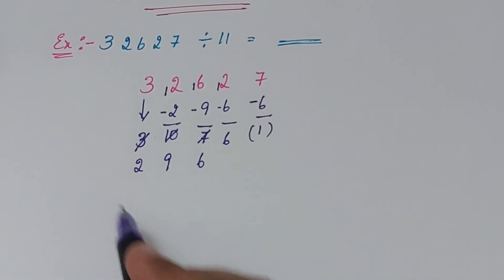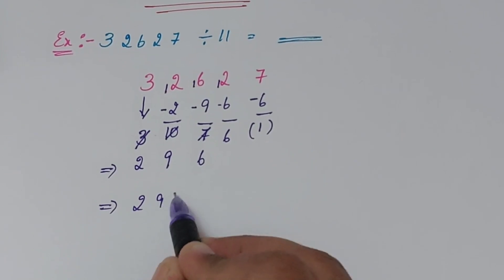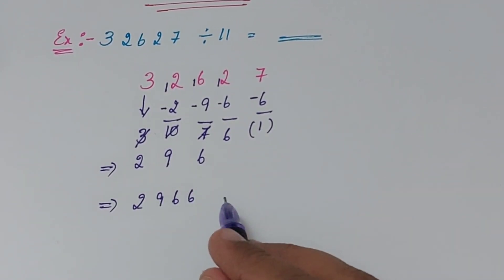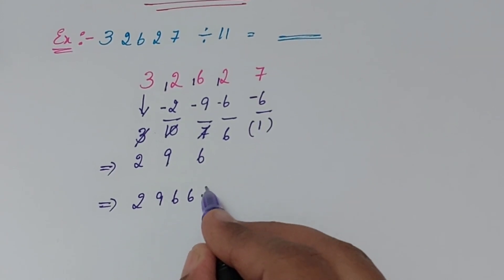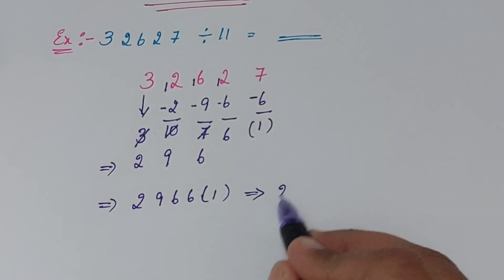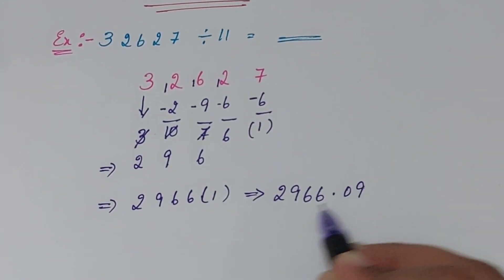Whatever the last number, you just take it as reminder. And now the answer is 2, 9, 6, 6, whatever the reminders here after reducing we are going to take, and 1 as a reminder. So if you need a correct answer, just take before number for what is there in the reminder place. So that means 2, 9, 6, 6 point 0, 9 is your answer.